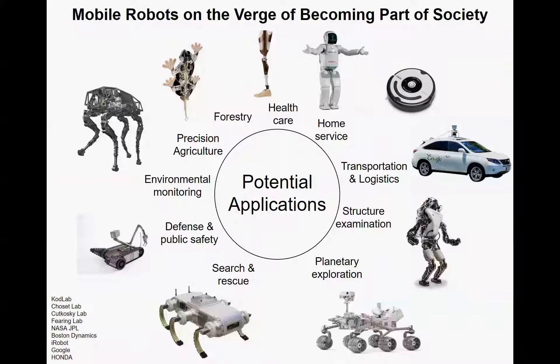We have been envisioning having robots to help us for different applications in our society. We already have many robots that can move really well in lab, and some of them have started becoming part of our life. For example, robotic vacuum cleaners are widely used in families, and self-driving cars are on the verge of doing so.